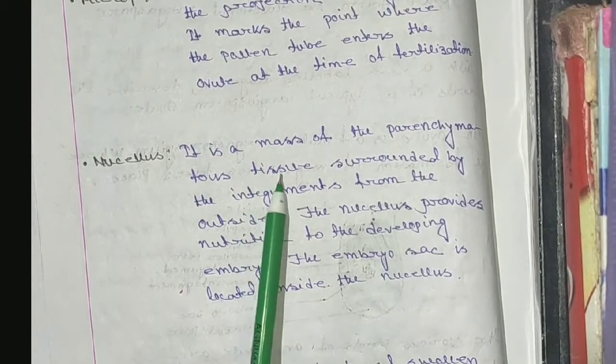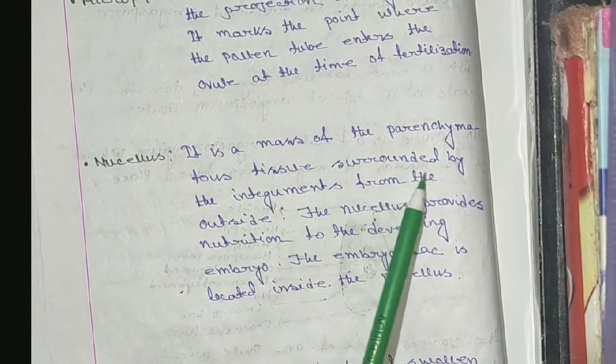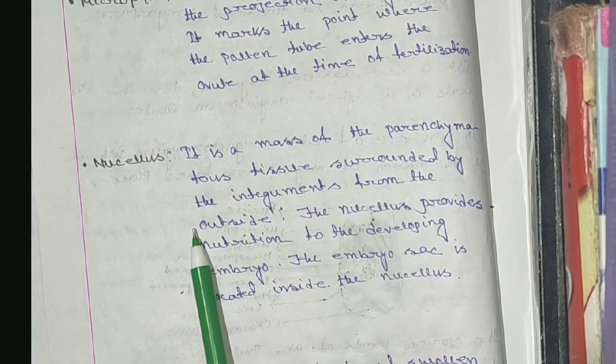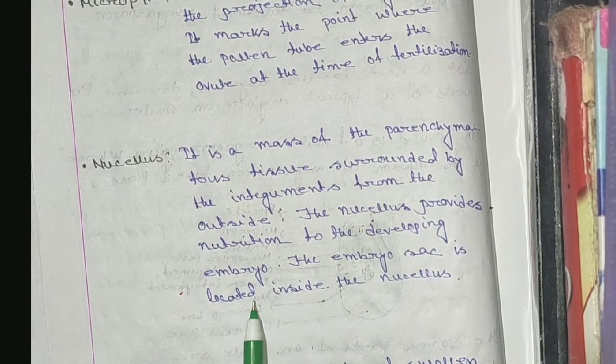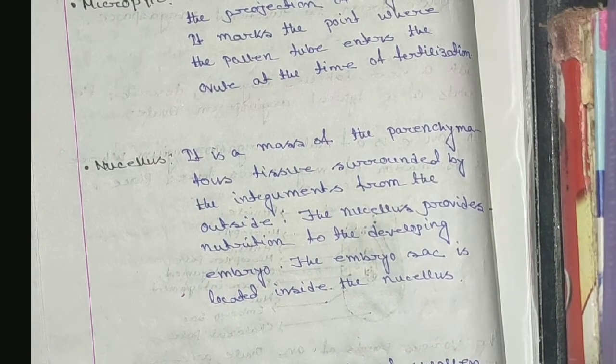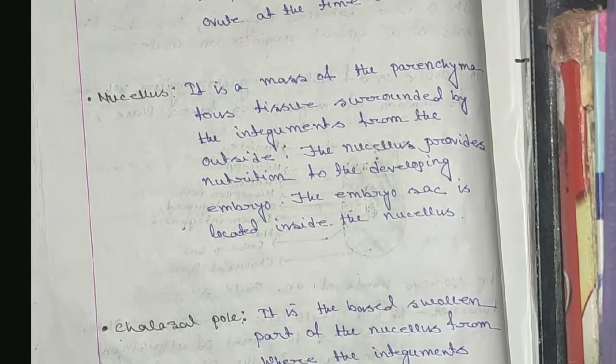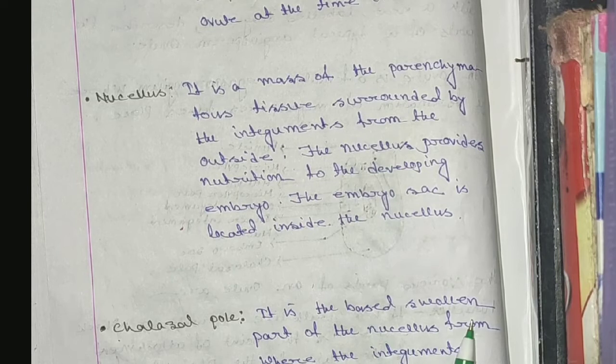The nucellus is a mass of parenchymatous tissue surrounded by the integument from the outside. The nucellus provides nutrition to the developing embryo, and the embryo sac is located inside the nucellus. The chalazal end is the basal part of the nucellus from where the integuments originate.